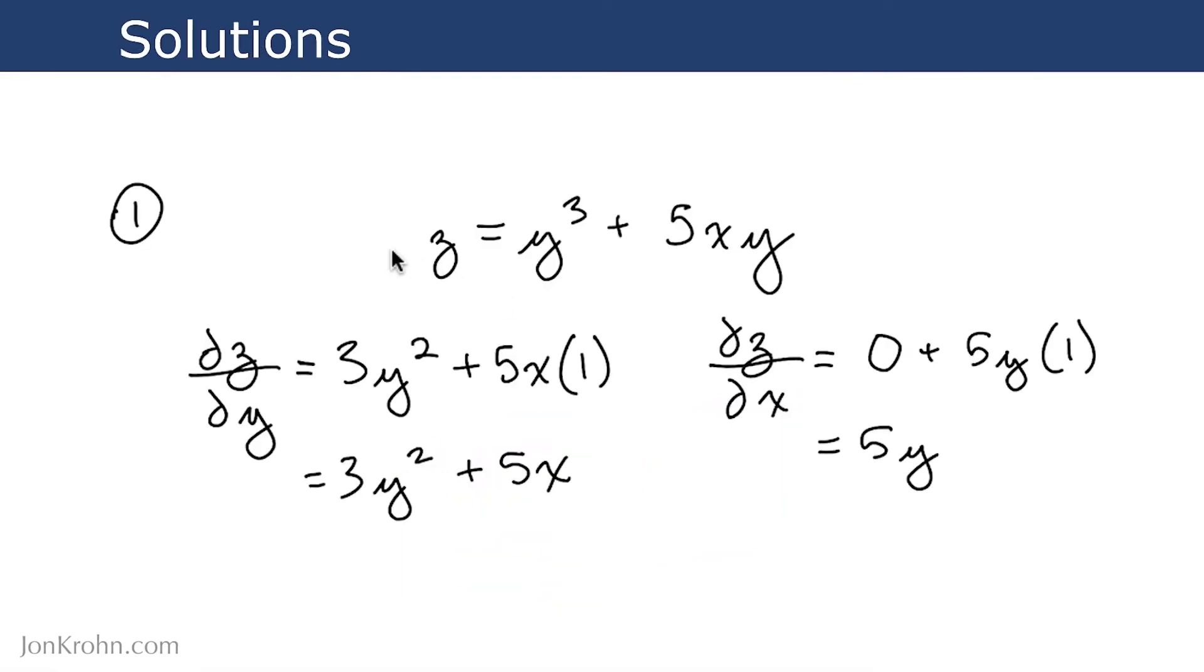All right, for the first exercise, here is your equation. You should have found two partial derivatives: ∂z/∂y and ∂z/∂x. ∂z/∂y comes out to 3y² plus 5x, and ∂z/∂x comes out to 5y.